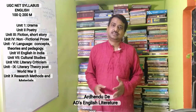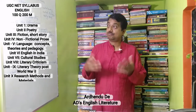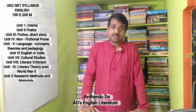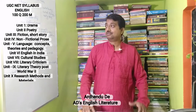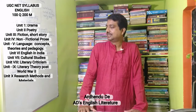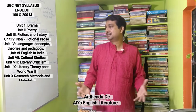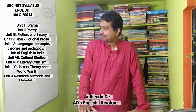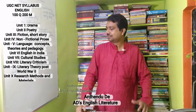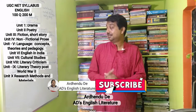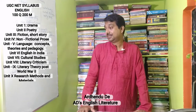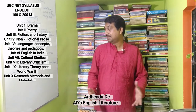Now look at the syllabus. There is drama, poetry, fiction, short stories, non-fictional prose, language, and notably the concepts of theory and pedagogy in Unit 5. In Unit 6, there is English in India — history, evolution, and other features. Unit 7 is cultural studies. Unit 8 is literary criticism. Unit 9 is literary theory post-World War 2. And the final unit is research methods and materials in English.